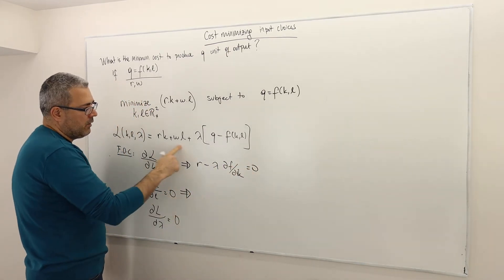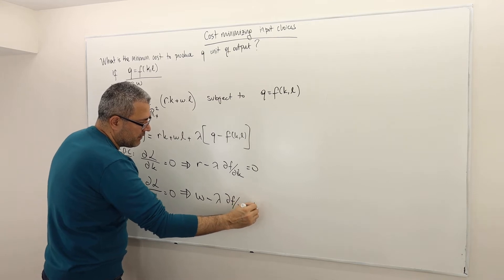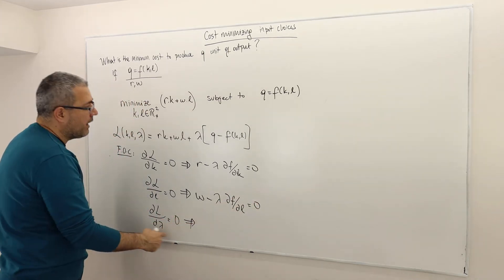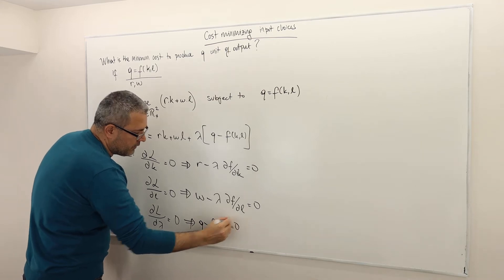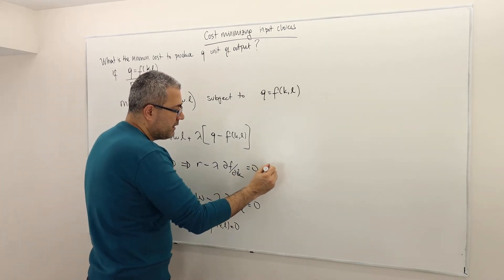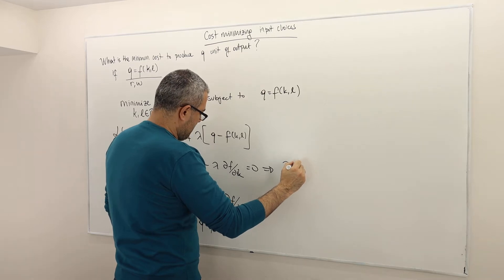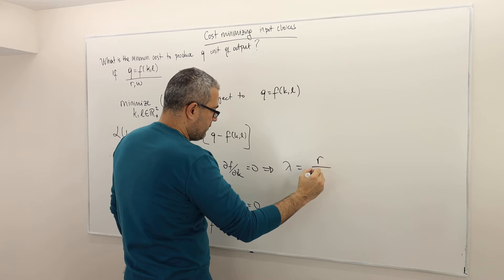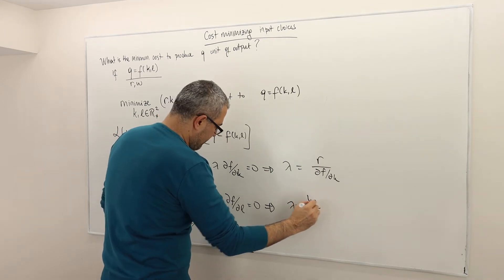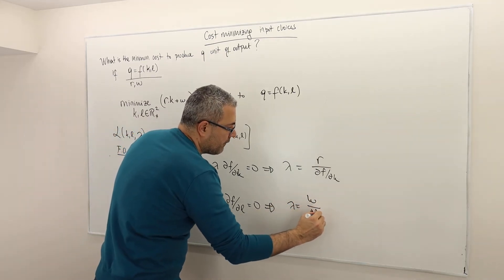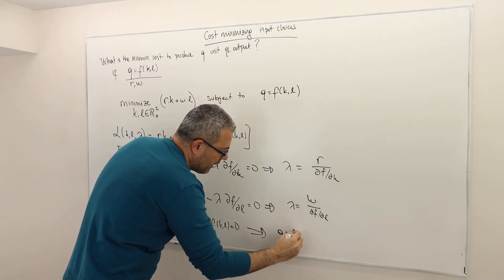Similarly, the partial derivative with respect to L gives W minus lambda times del F divided by del L, which equals zero. And the partial derivative with respect to lambda gives Q minus F of KL equals zero, which is just the constraint.